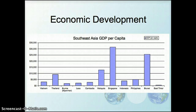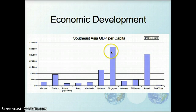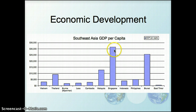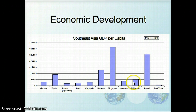Looking at economic development indicators such as GDP in Southeast Asia, some countries such as Singapore, Brunei, and Malaysia have a fairly high GDP — Singapore over $30,000 a year per capita. Other countries are much poorer: Vietnam, Burma, Laos, Cambodia, Indonesia, and the Philippines being particularly poor with under $5,000 worth of GDP per capita.